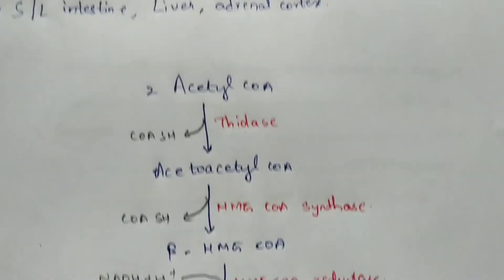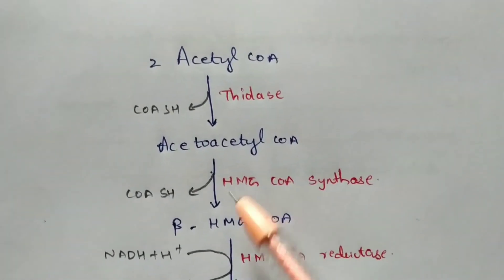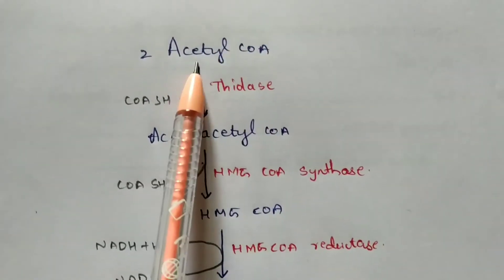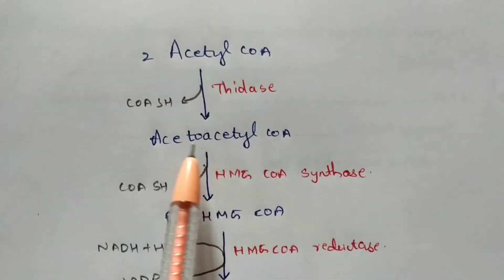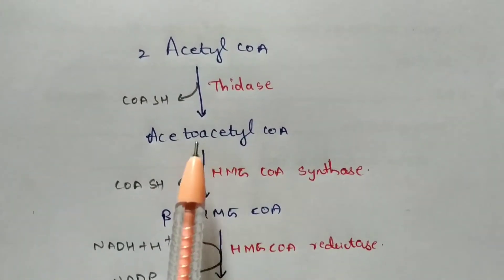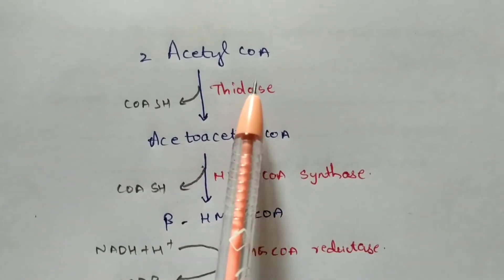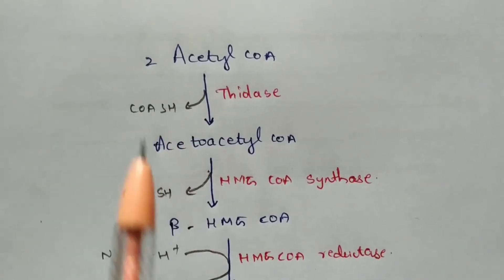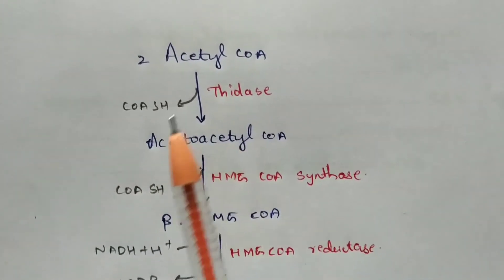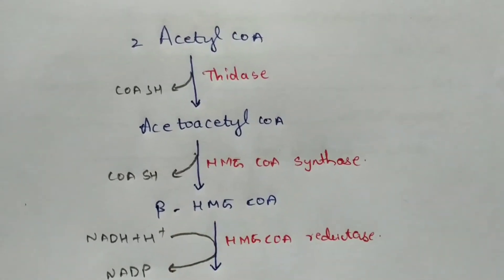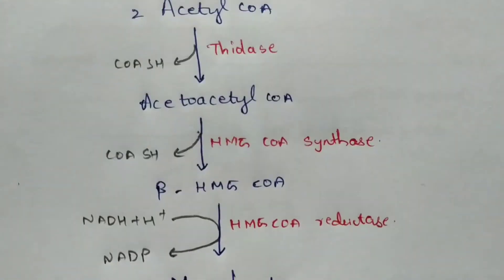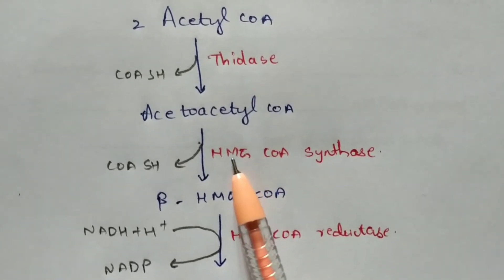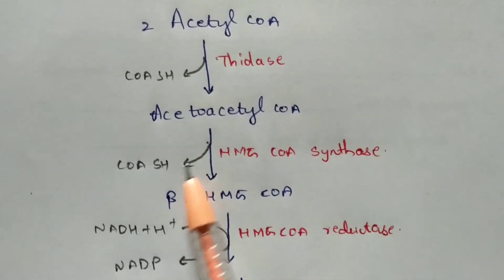The biosynthesis of cholesterol starts with two molecules of acetyl-CoA. These two acetyl-CoA molecules lead to the formation of acetoacetyl-CoA, and the enzyme utilized here is thiolase; CoA-SH is liberated. Next, acetoacetyl-CoA leads to the formation of β-HMG-CoA (beta-hydroxy methyl glutaryl-CoA), and the enzyme utilized is HMG-CoA synthase; CoA-SH is liberated again.